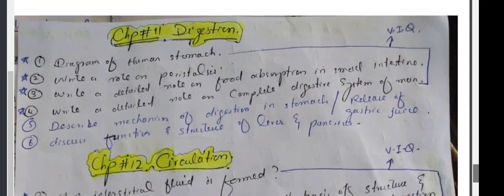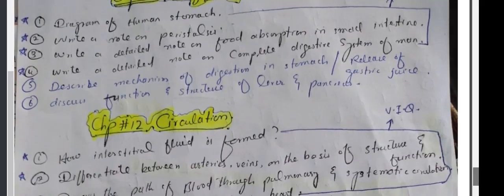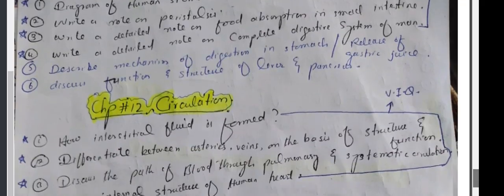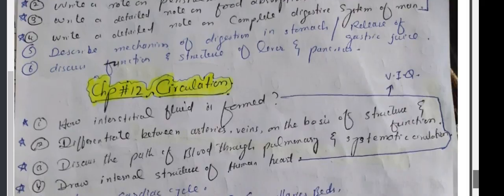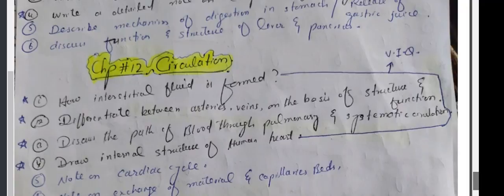Chapter 11. Diagram of human stomach. Write a note on peristalsis. Write a detailed note on food absorption. Write a detailed note on complete digestive system of man. Describe mechanism of digestion in stomach. Discuss function and structure of liver and pancreas.